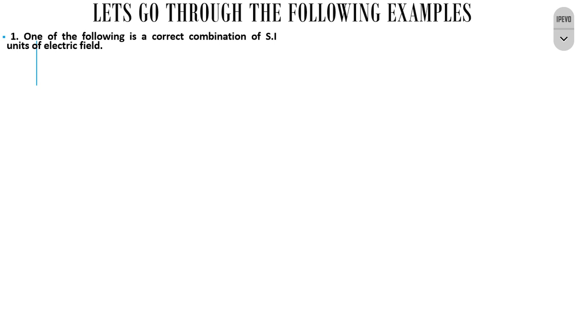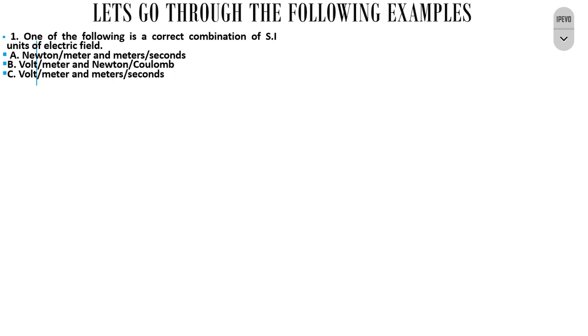Let us go through the filling examples. The first one says: which one of the following is the correct combination of SI units of electric field? The correct option is B — volt per meter or newton per coulomb.